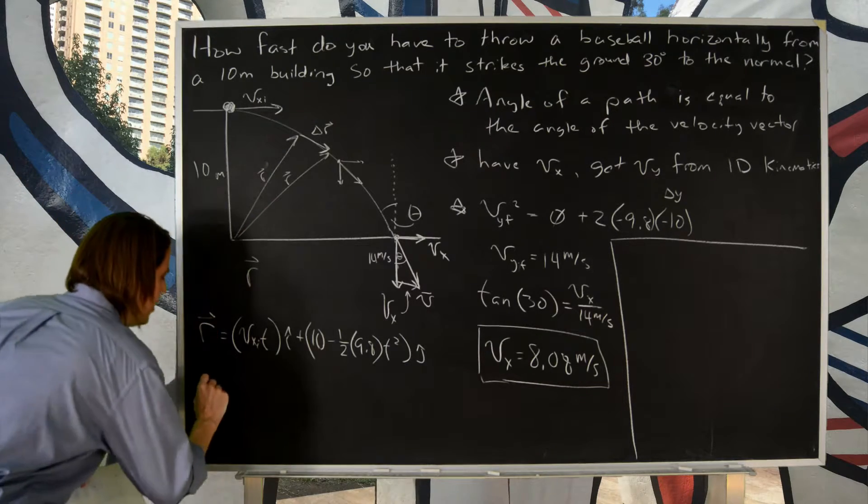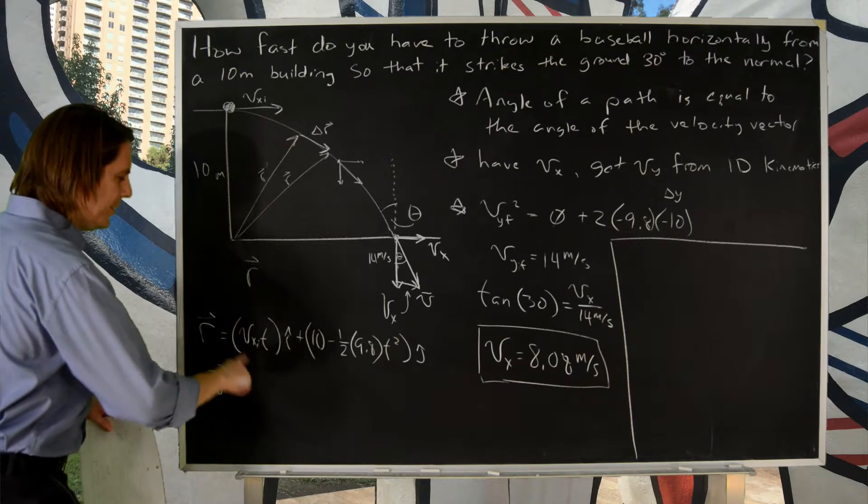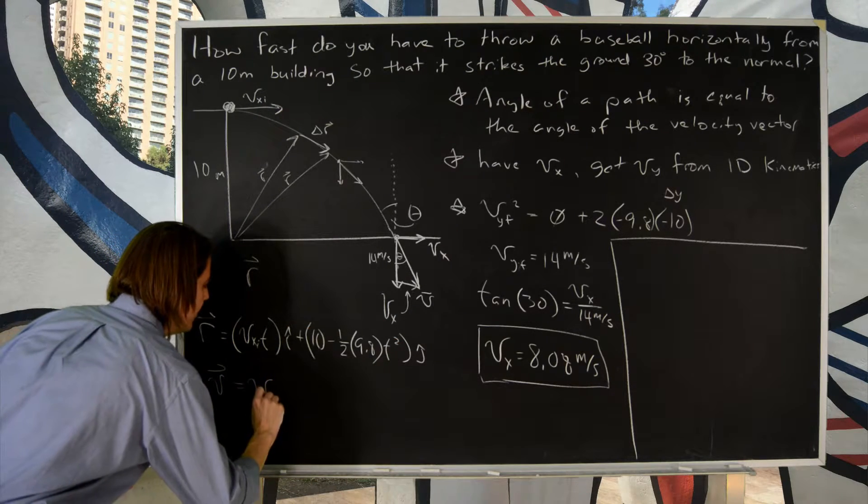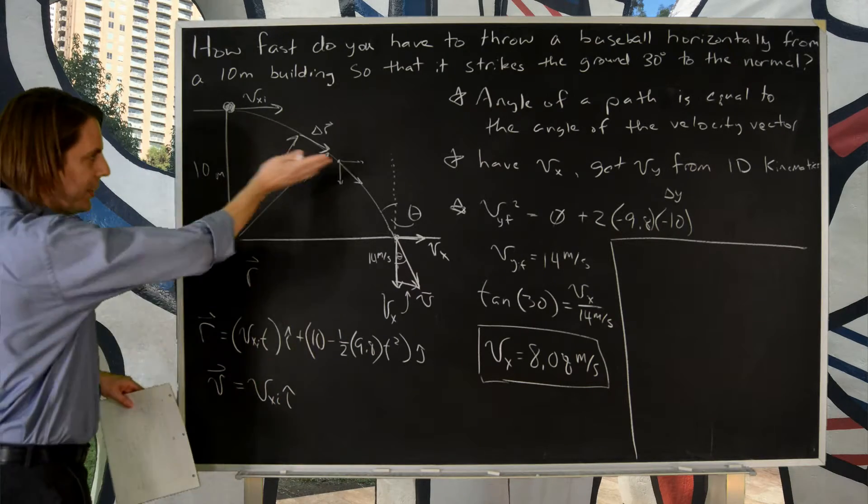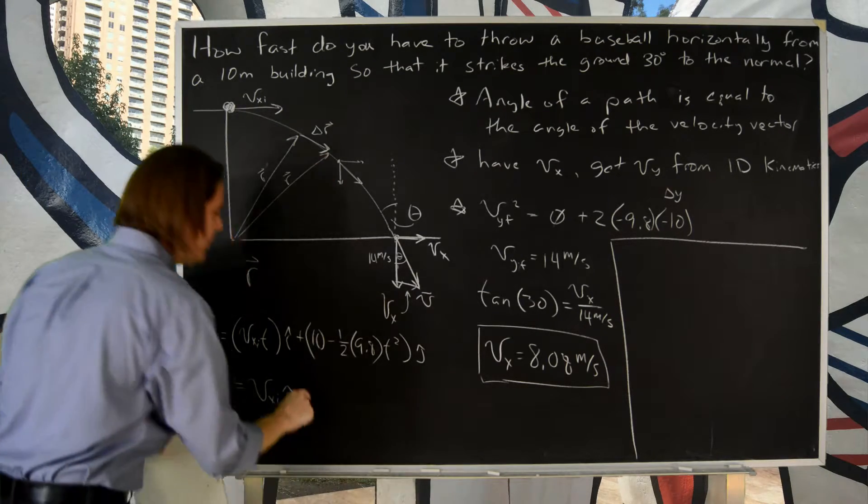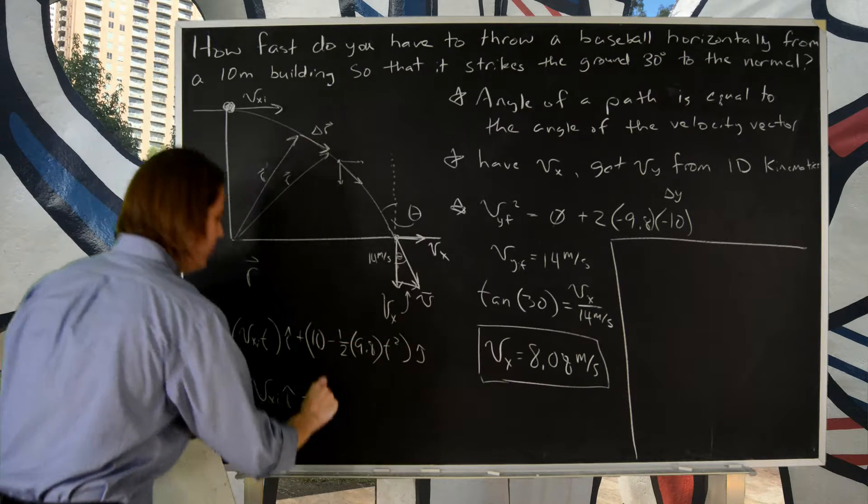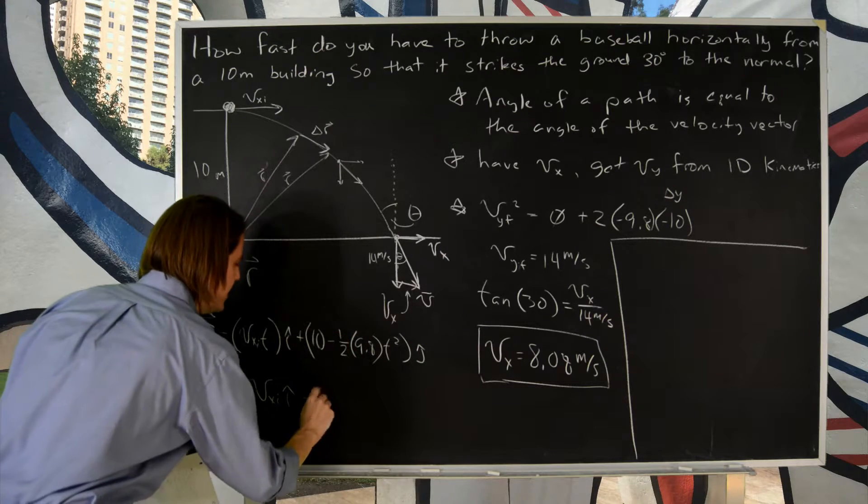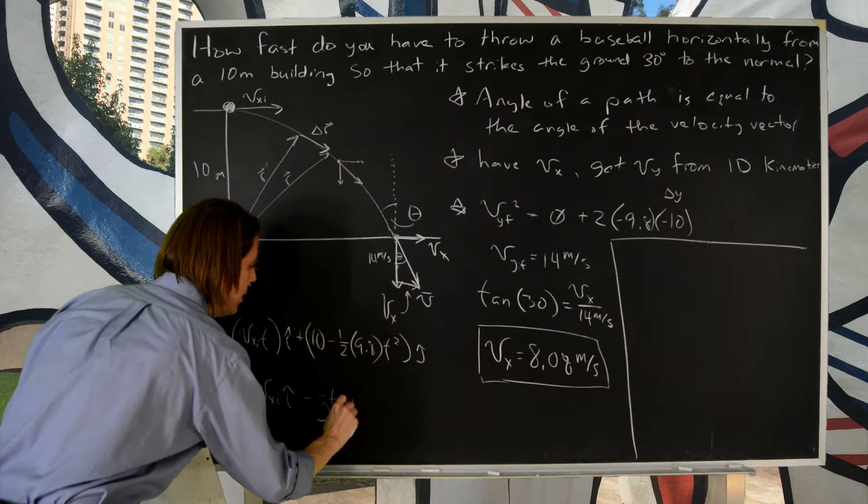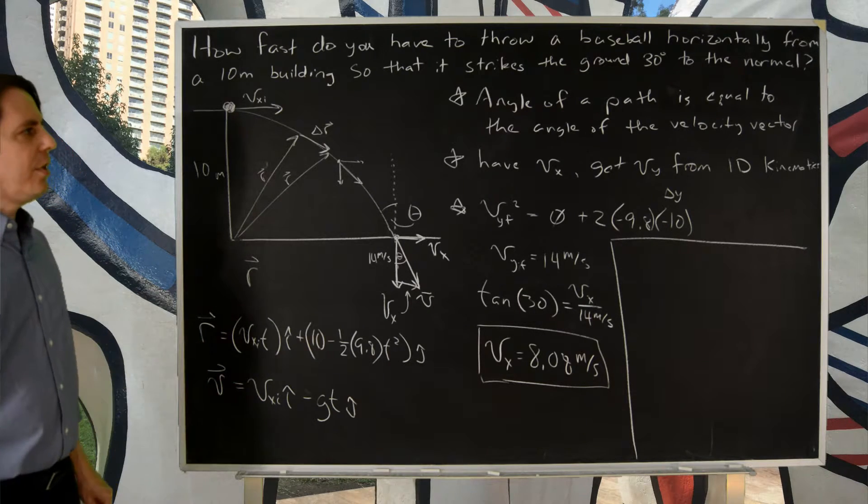There we go. So I just wrote the position vector. Now I can write the velocity vector. Once you have a position vector, it's easy to write the velocity vector. You just take the derivative. So the derivative here is the velocity in the x initial i hat. So that's a constant. That's what we know. It goes with constant x. The derivative of that is zero, and the half cancel, so it's really minus gt j hat. So there's r and v, or position and velocity.